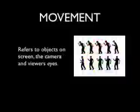The next component is movement. Movement refers to objects on the screen — like someone walking across the picture plane — as well as the camera, such as panning left, panning right, or zooming in. It also refers to the viewer's eyes. We can move the viewer's eyes across the screen by placing action and objects in various quadrants. So movement refers to three different things: objects on the screen, the camera, and the viewer's eyes.